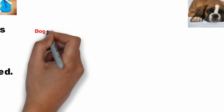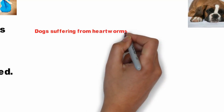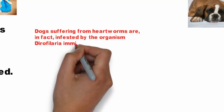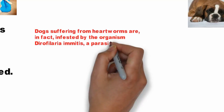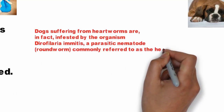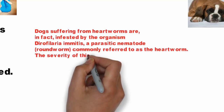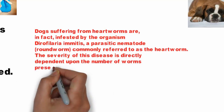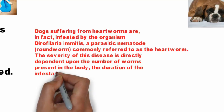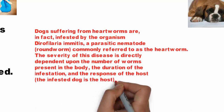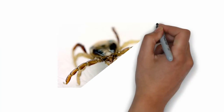4. Heartworms. Dogs suffering from heartworms are in fact infested by the organism Dirofilaria immitis, a parasitic nematode roundworm commonly referred to as the heartworm. The severity of this disease is directly dependent upon the number of worms present in the body, the duration of the infestation, and the response of the host — the infested dog.